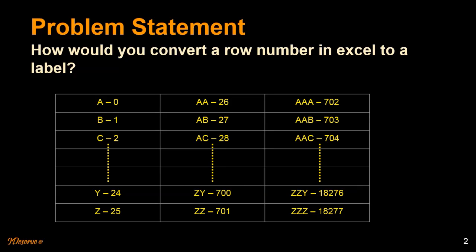So the question is, how would you convert a row number in Excel to a label and vice versa? In Excel, we have letters A to Z denoted by row IDs or row numbers from 0 to 25. So we have 26 letters.